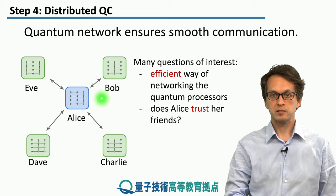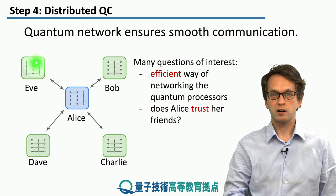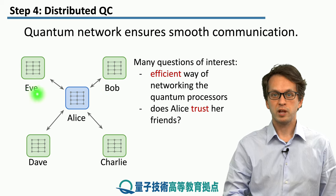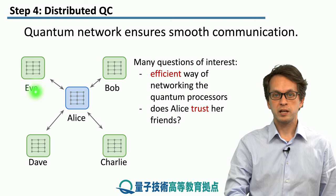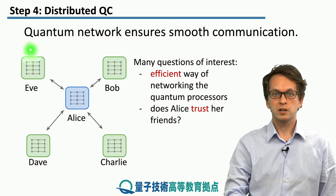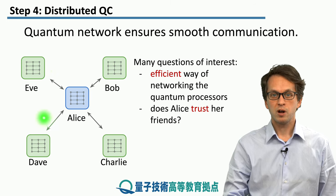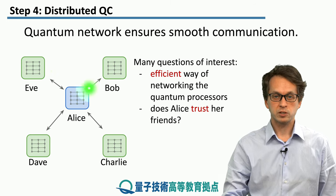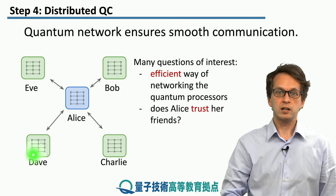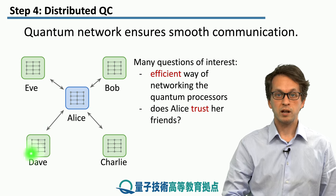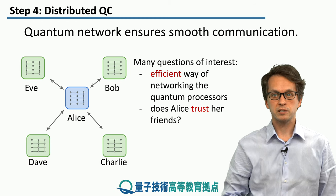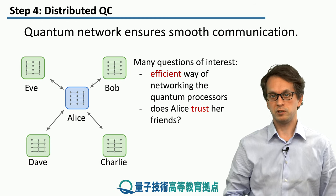So here, Alice, Bob, Charlie, Dave, and Eve all share some small number of qubits, and they can entangle them in some way. They can also exchange quantum information by using the quantum network, or exchange entangled qubits. They can connect those local cluster states together into larger cluster states and then perform computation on that.